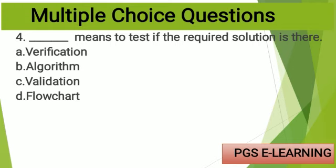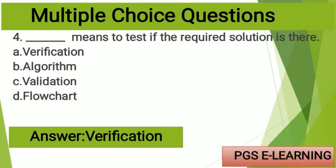MCQ number four: blank means to test if the required solution is there. Option A: verification, Option B: algorithm, Option C: validation, Option D: flowchart. The correct answer is verification.